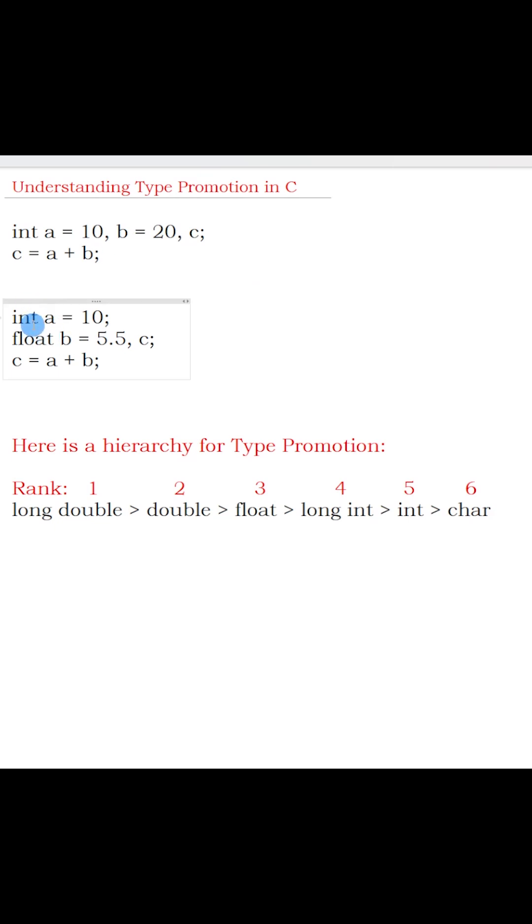Take this example: we have a variable 'a' of type integer, and variables 'b' and 'c' of type float. Both are different data types. Will the C compiler be able